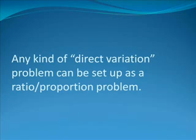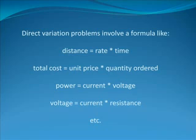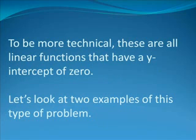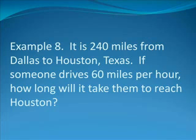Any kind of direct variation problem can be set up as a ratio-proportion problem. Direct variation problems involve a formula like distance equals rate times time, total cost equals unit price times quantity ordered, power is equal to current times voltage, voltage is equal to current times resistance, etc. To be more technical, these are all linear functions that have a y-intercept of zero. Let's look at two examples of this type of problem.